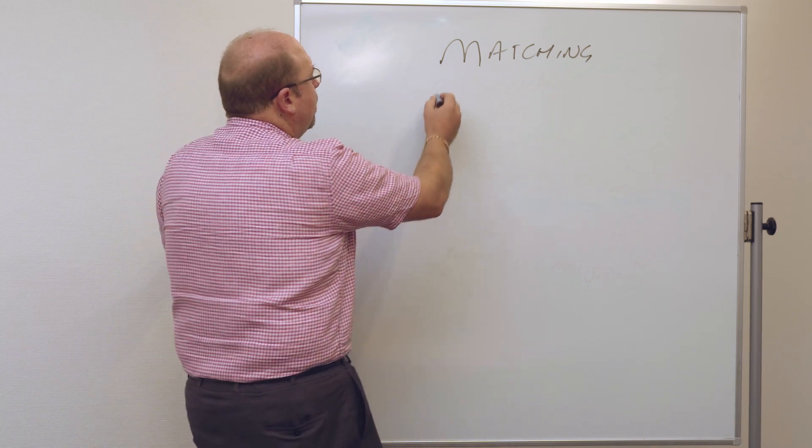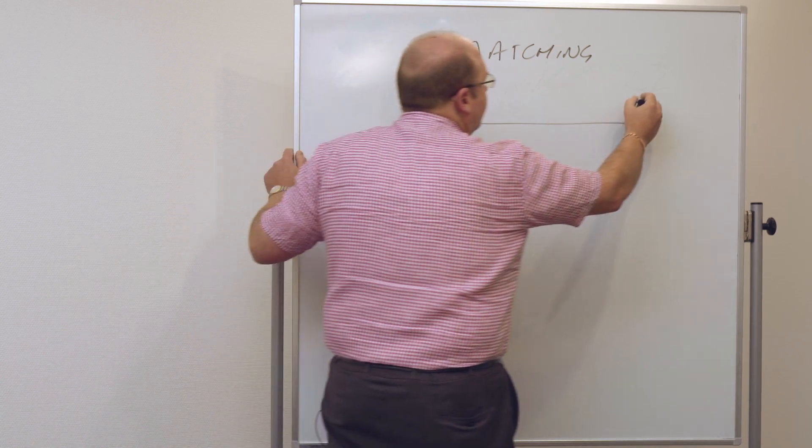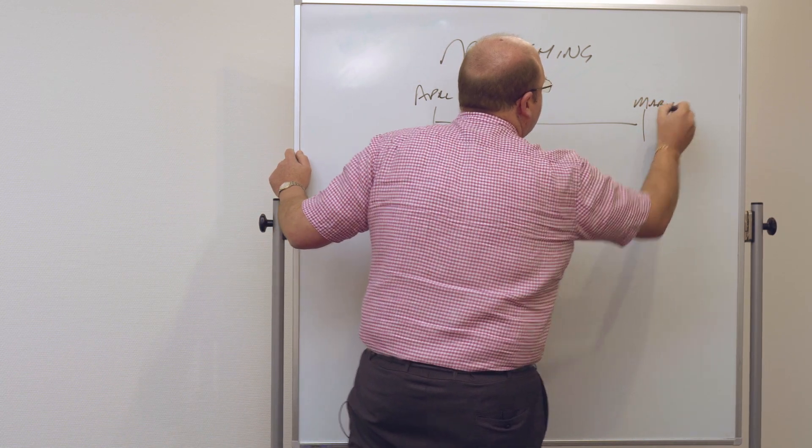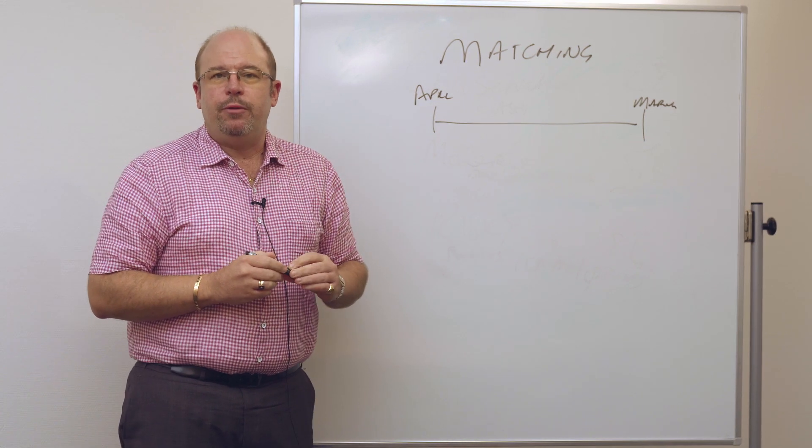So, for example, if we take a timeline, and we have this as April through to March, there's a whole lot of expenditure and income that gets incurred in this 12-month period.